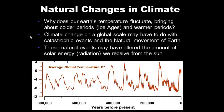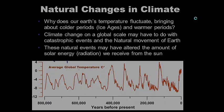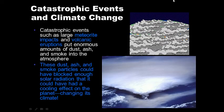Natural changes in climate — why does Earth's temperature fluctuate, bringing about colder periods, ice ages, and warmer periods? Climate change on a global scale may have to do with catastrophic events and the natural movement of Earth. These natural events may have altered the amount of solar energy or radiation we receive from the sun. Looking at average global temperatures over the last 800,000 years, it's gone up and down like a roller coaster. One cause is natural catastrophic events like meteorite impacts and volcanic eruptions.